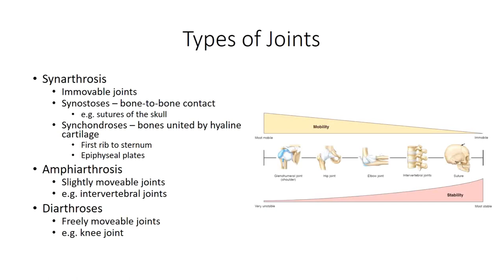Synchondroses are another example of an immovable joint. In this case, it involves a fusion of bones through hyaline cartilage. An example would be the epiphyseal growth plates we discussed in our session on bone tissue. You typically would not characterize growth plates as being joints, but by definition, they would qualify. Amphiarthrotic joints are considered slightly movable, allowing for a small degree of gliding and rotation. Fibrocartilaginous joints, like we see with the intervertebral discs, would be a good example.